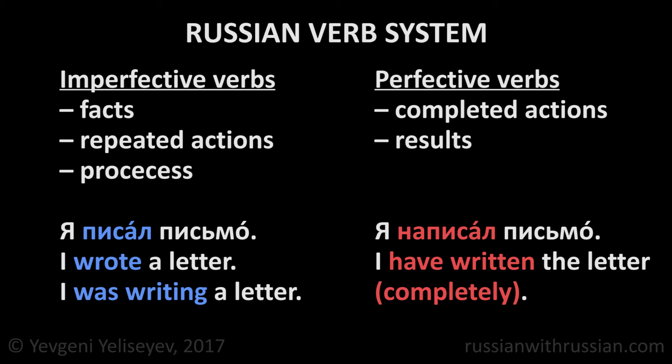So, Russian-language learners have to memorize two verbs for any action — the imperfective one and the perfective one. It may seem difficult in the beginning, but actually in the majority of cases these verbs are similar to each other, and there are some rules and regularities that can help us obtain the perfective verb from the imperfective one and vice versa.